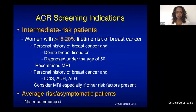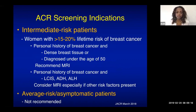The ACR recently updated recommendations for intermediate-risk patients — those with 15 to 20% lifetime risk — including patients with prior personal history of breast cancer and dense breast tissue, or cancer diagnosed before age 50. MRI is also recommended or should be considered for patients with high-risk lesions on pathology such as lobular carcinoma in situ, atypical ductal hyperplasia, or ALH, especially if other risk factors are present.